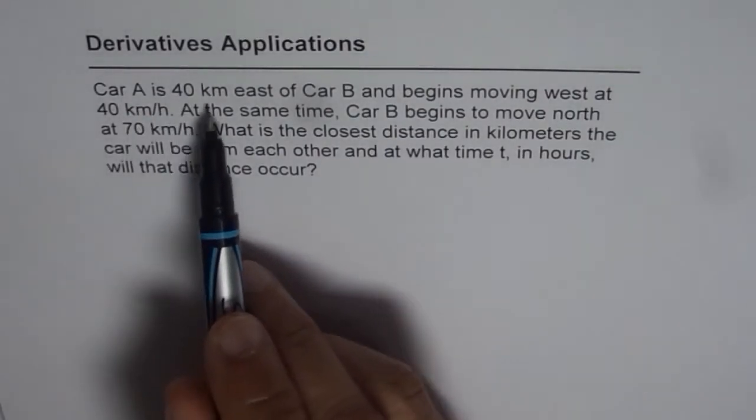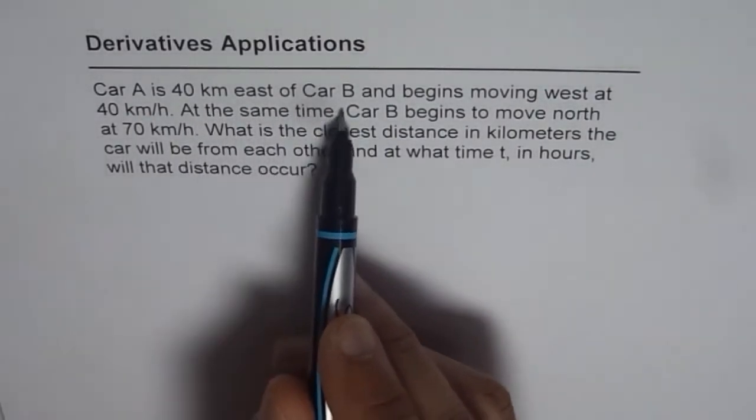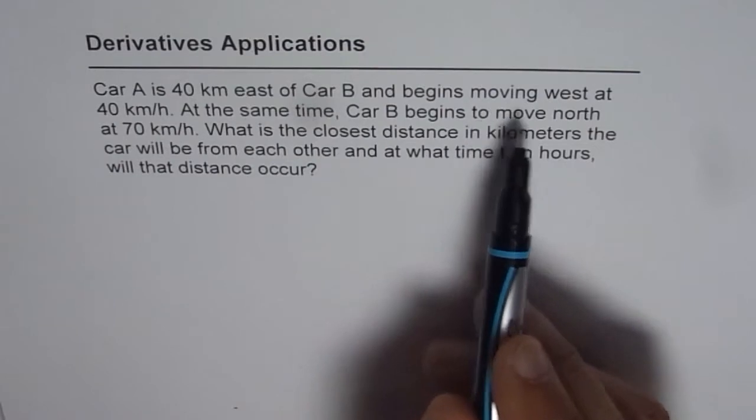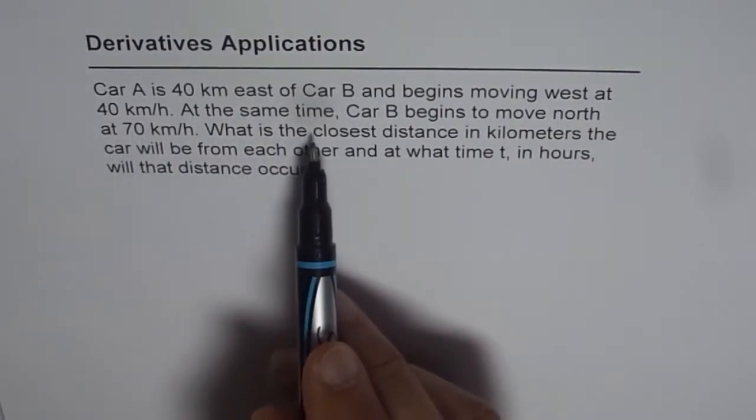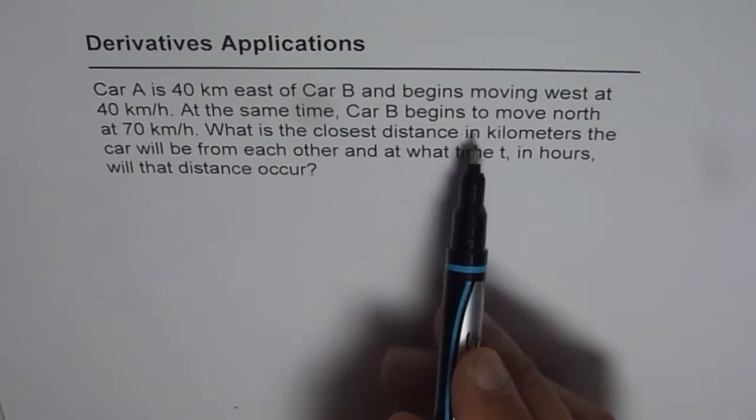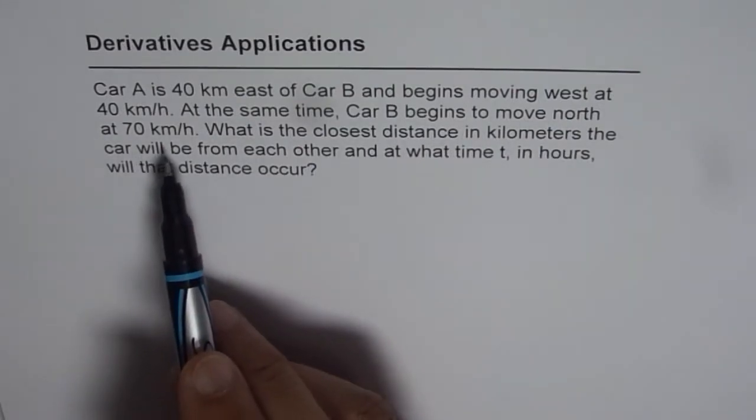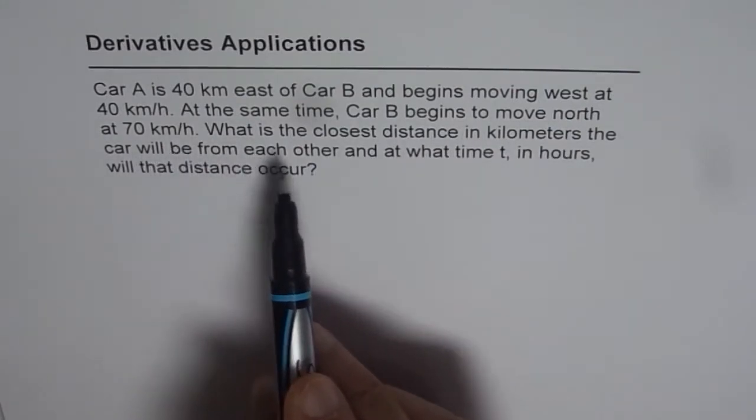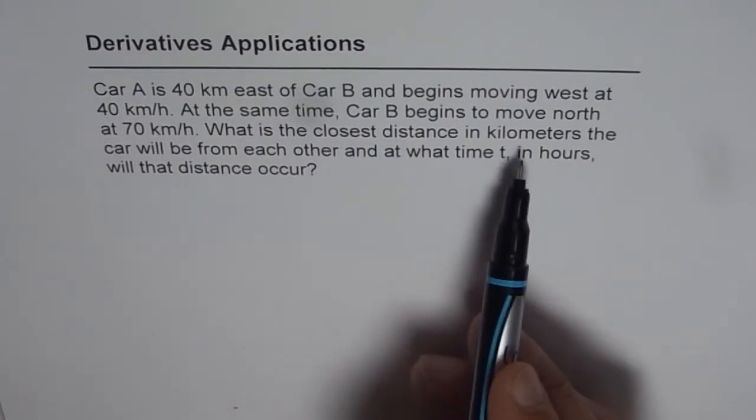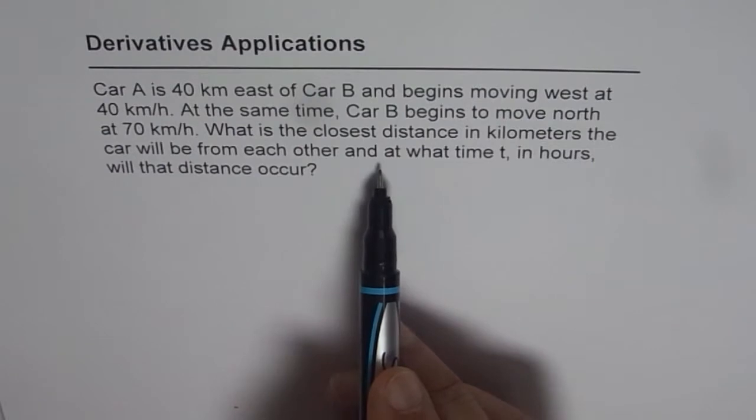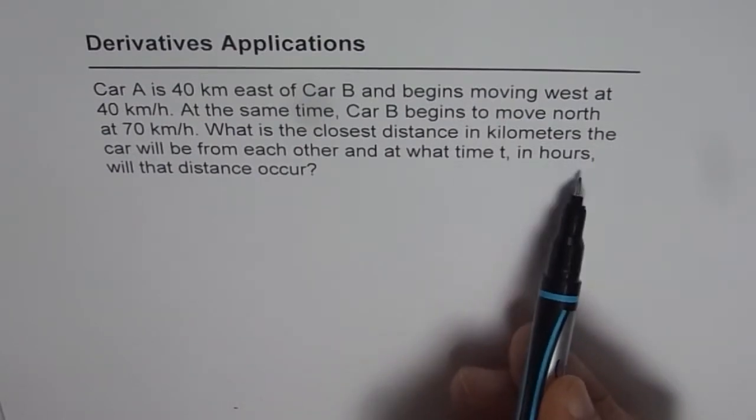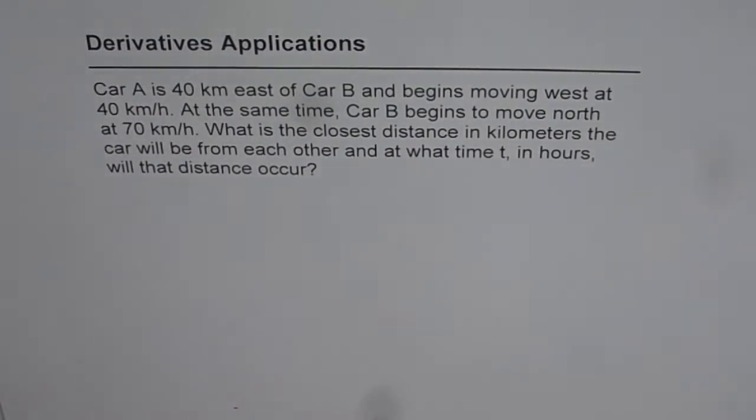Car A is 40 kilometers east of car B and begins moving west at 40 kilometers per hour. At the same time, car B begins to move north at 70 kilometers per hour. What is the closest distance in kilometers the car will be from each other and at what time in hours will that distance occur? So that is the question.